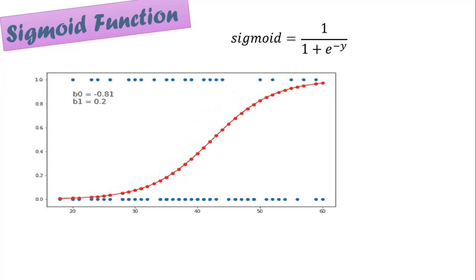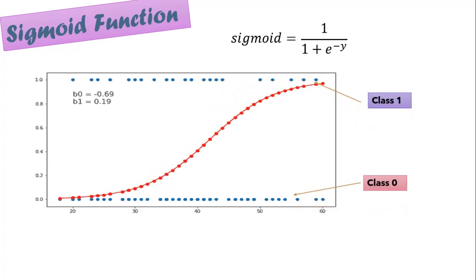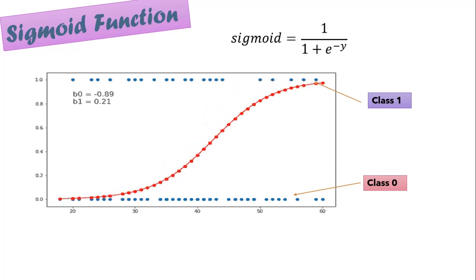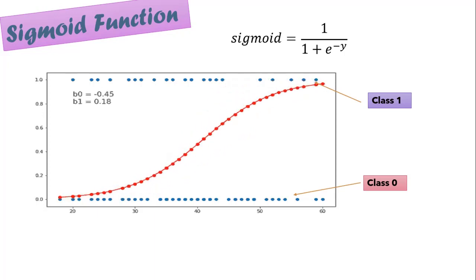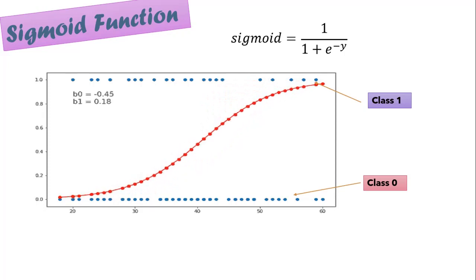The sigmoid function gives us the probability of being in class 1 or class 0. Generally we take the threshold as 0.5 and say that if p > 0.5 then it belongs to class 1, and if p < 0.5 then it belongs to class 0.